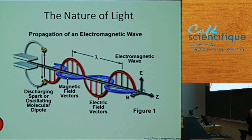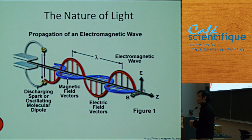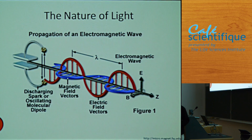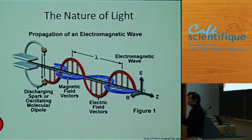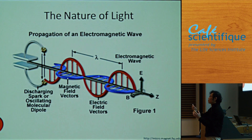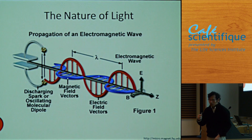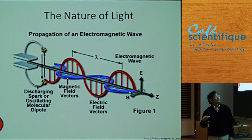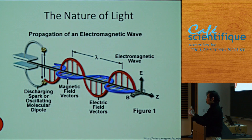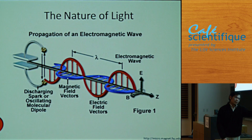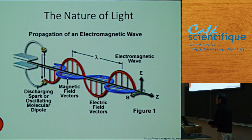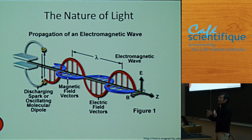Now that we understand how a microscope works, I want to introduce what the limitation of the optical microscope is. That comes to the nature of light. Now we know light is an electromagnetic wave. The physics we know is: if I have a charge in space and the charge moves, it would generate an electromagnetic wave. Electromagnetic waves are oscillating electrical and magnetic fields — the red one is the electrical field, the blue one is the magnetic field — they just propagate. Light is somewhere between a particle and a wave, but the wave description explains a lot of things.